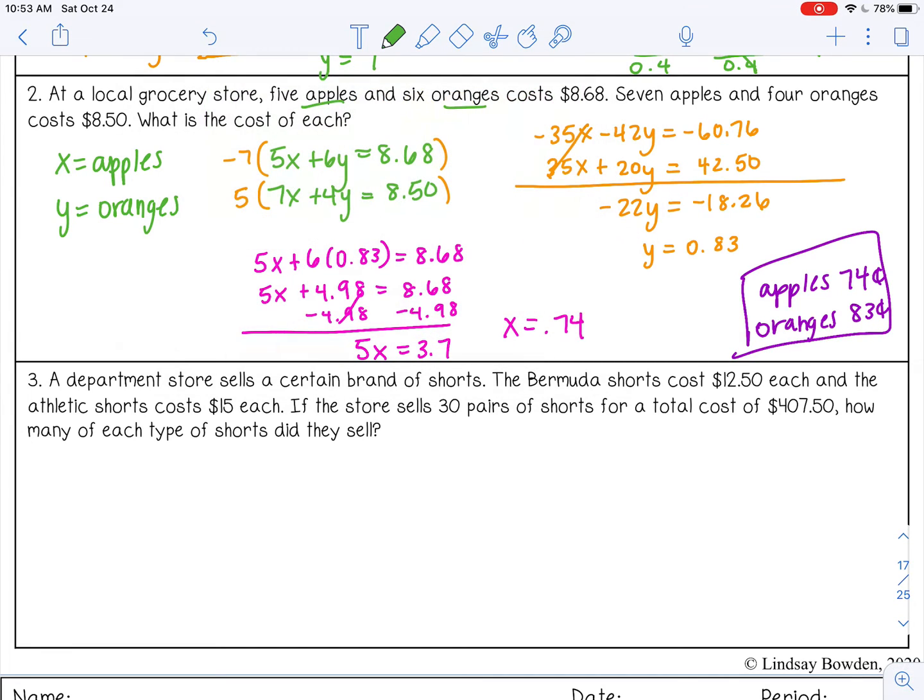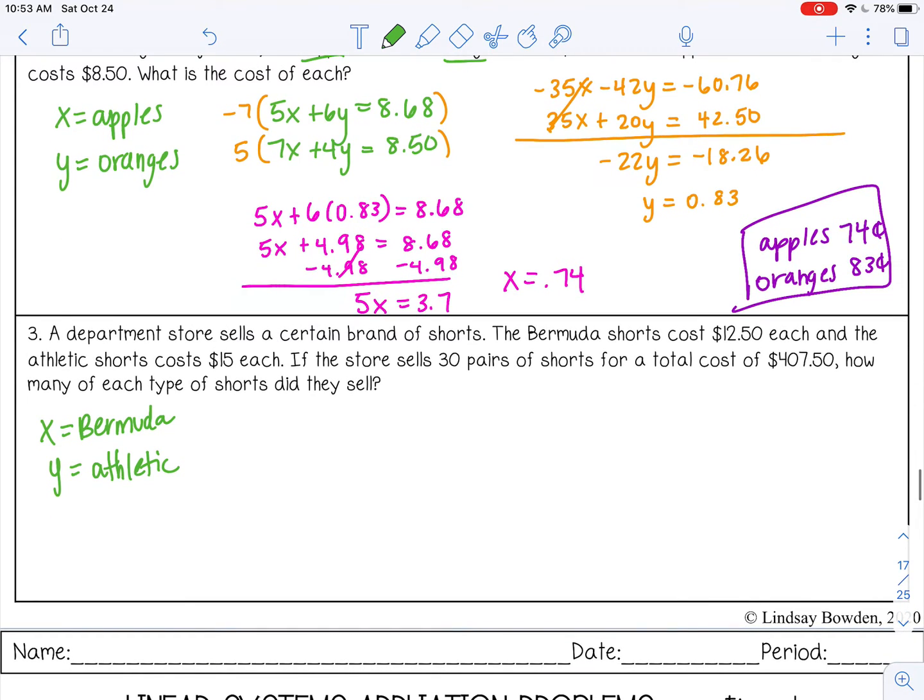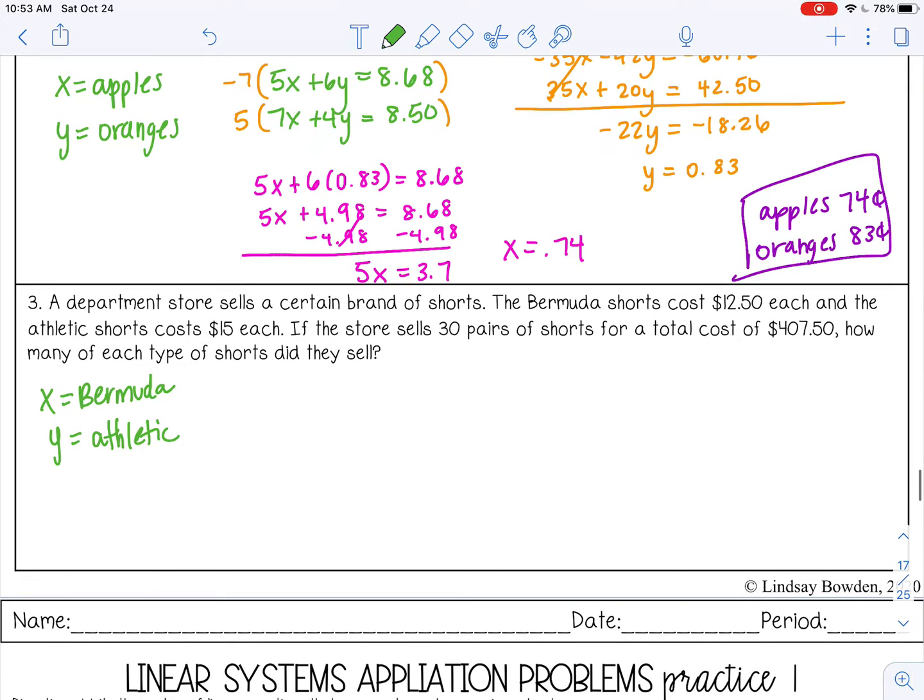A department store sells a certain brand of shorts. The Bermuda shorts cost $12.50 each, and the athletic shorts cost $15 each. All right, so there's our two variables. Bermuda shorts and athletic shorts. If the store sells 30 pairs of shorts for a total cost of $407.50. How many of each type of shorts did they sell? Okay, so this one is a little bit different.